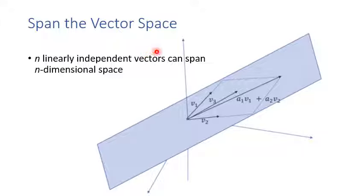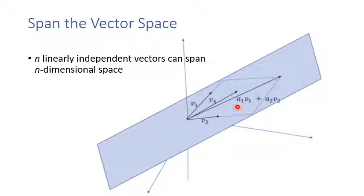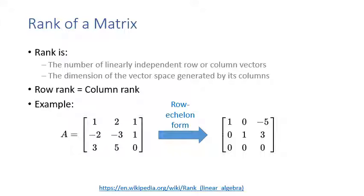We care about linear independence because vectors can span a vector space. N linearly independent vectors can span an N-dimensional space. For example, two linearly independent 2D vectors v1 and v2 can generate any point in the plane through their linear combinations — any vector v3 or v4 can be formed by changing parameters a1 and a2. This is how two linearly independent vectors span 2D space.